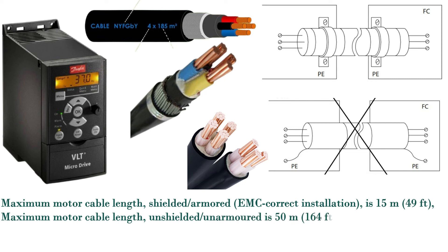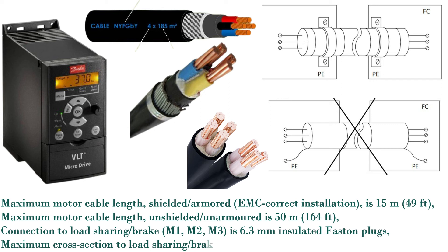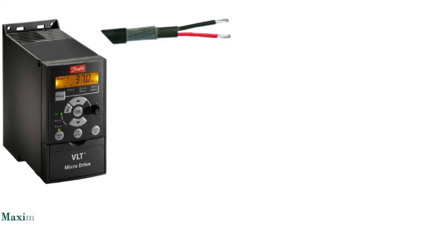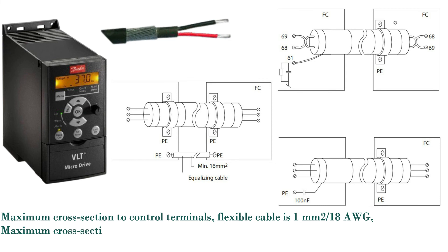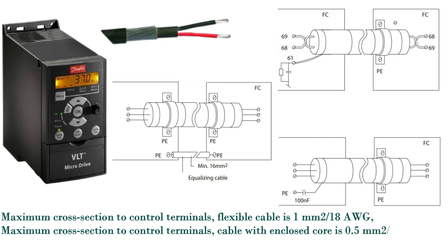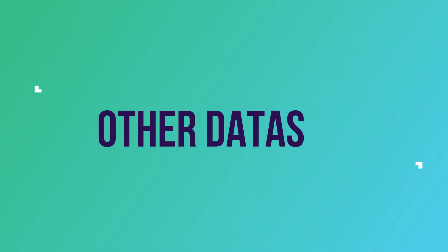Connection to load sharing/brake M1, M2, M3 is 6.3 mm insulated fast-on plugs. Maximum cross section to load sharing/brake M4, M5 is 16 mm² / 6 AWG. Maximum cross section to control terminals, flexible cable is 1 mm² / 18 AWG. Maximum cross section to control terminals, cable with enclosed core is 0.5 mm² / 20 AWG. Minimum cross section to control terminals is 0.25 mm² / 24 AWG.